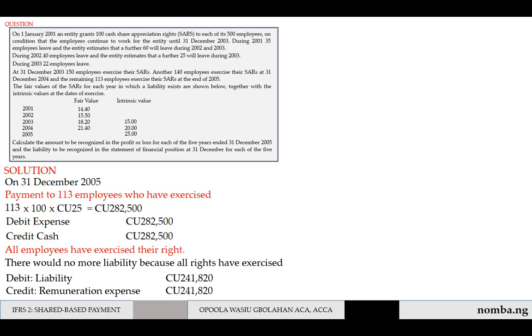This is how you treat cash-settled share-based payments. Note that it is very different from equity-settled: for cash-settled, you must keep using the share price at each year end to determine the value of liabilities. Unlike equity-settled share-based payments, where you use the share price (fair value of the option) at the grant date throughout the entire vesting period. That's it for cash-settled share-based payments.